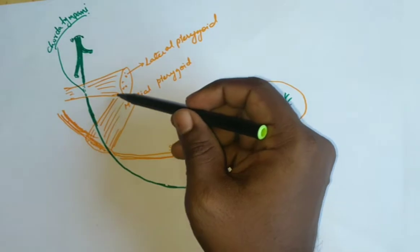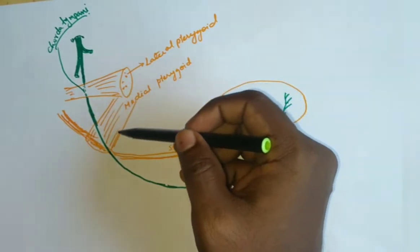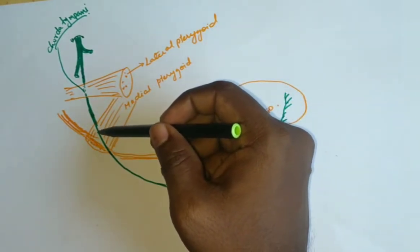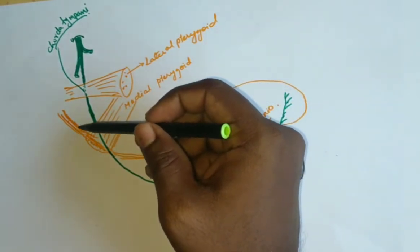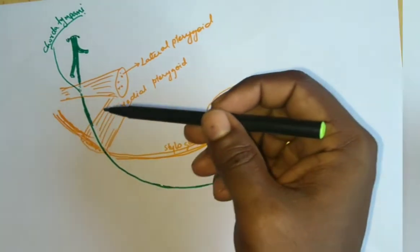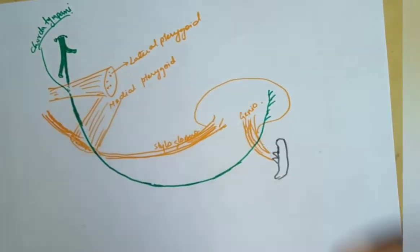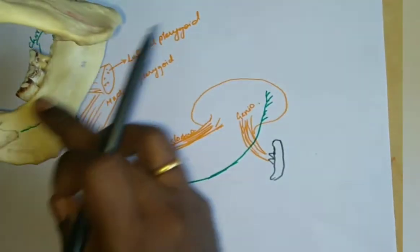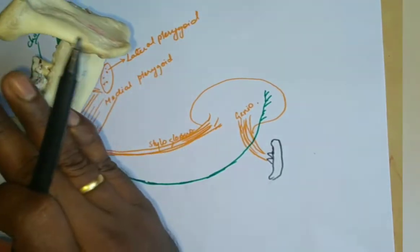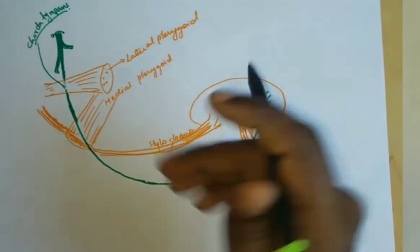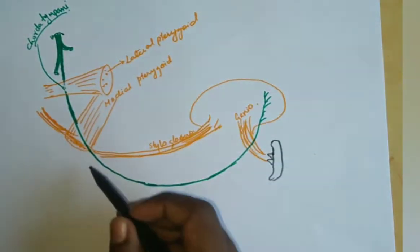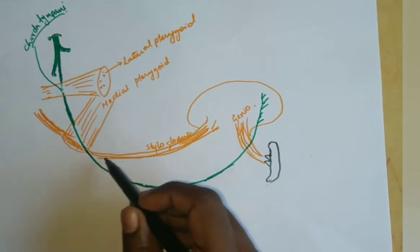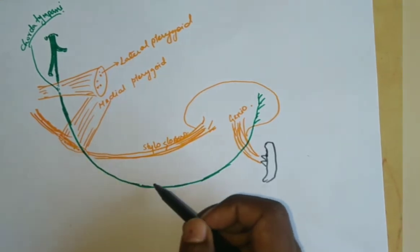The nerve continues downwards and is found superficial to the medial pterygoid. Overall, we can say it is present between the ramus of the mandible and the medial pterygoid muscle. Then it crosses the styloglossus muscle to enter further.